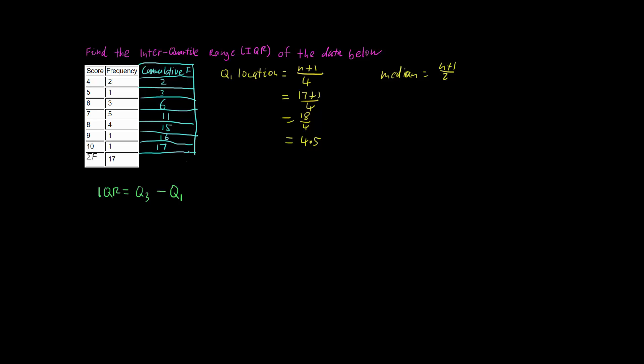So our first quartile lies 4.5 data points in. So we have 2 data points, 3rd data point, and then somewhere in here, because we have 3 more data points, it gets us up to 6. So our 4th number is a 6, and our 5th number is a 6. We want halfway between 6 and 6, which is 6, so our Q1 is equal to 6.